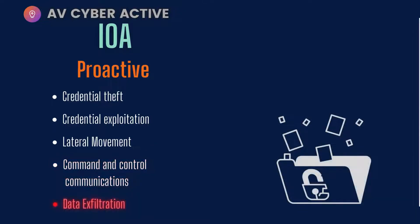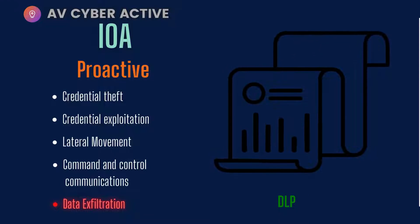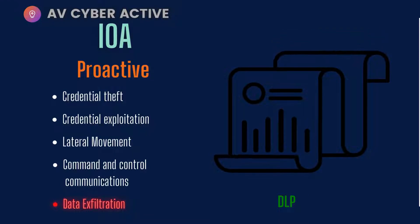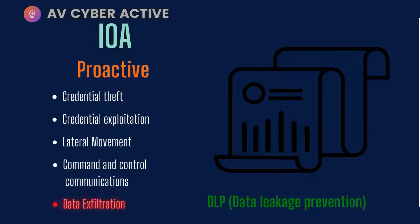The last IOA indicator is data exfiltration. If C2 communications have been established, depending on the perpetrator's motive, you might see a lot of data being exfiltrated out of the network. A good prevention is to put DLP — data leakage prevention — controls in place so it can alert you when that's happening.